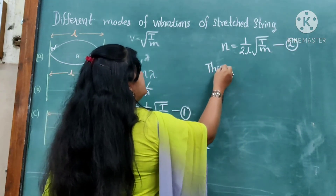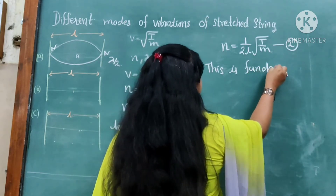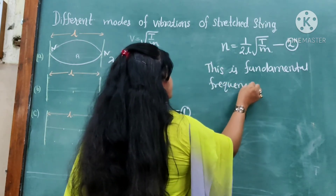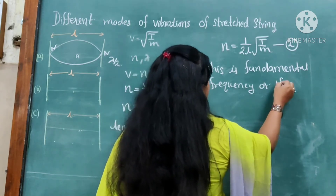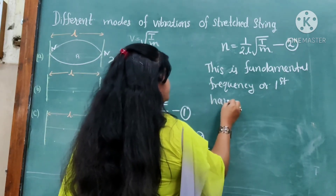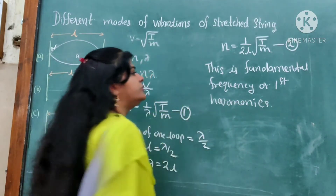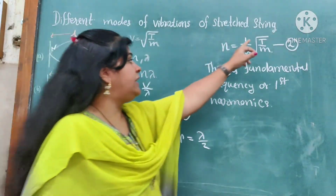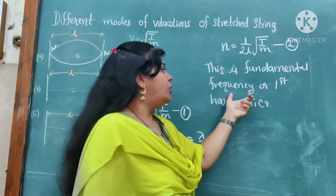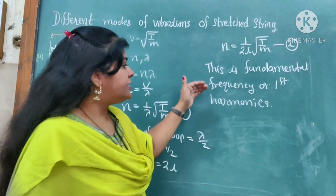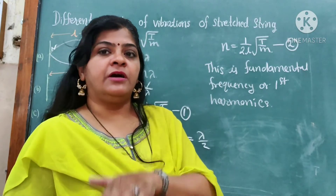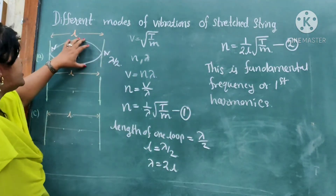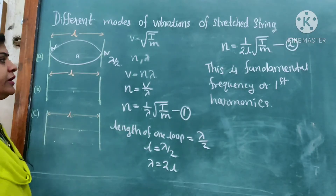Now substitute into equation number 1. It will become n is equal to 1 upon 2l times square root of T upon m. This is an important equation, which we call equation number 2. This is the fundamental frequency, also called the first harmonic. So we got n is equal to 1 upon 2l into square root of T upon m. This is the fundamental frequency along the string. It is also called the first harmonic, where an integral multiple of the fundamental frequency is called a harmonic. That is why it is called the first harmonic. In the first diagram we got this formula.